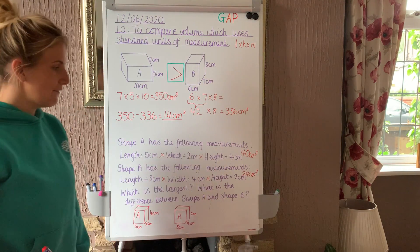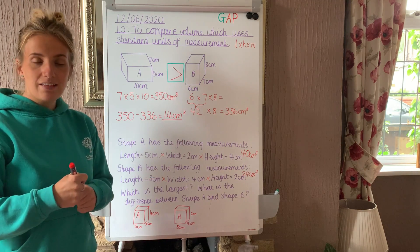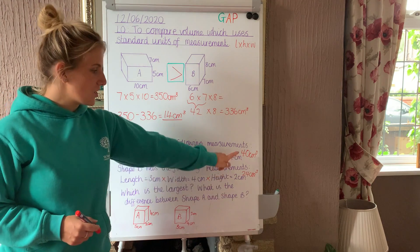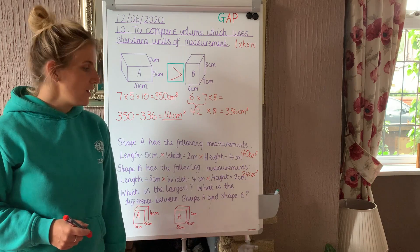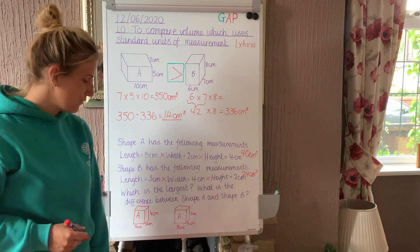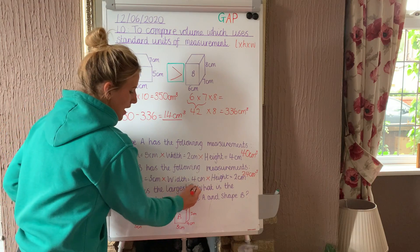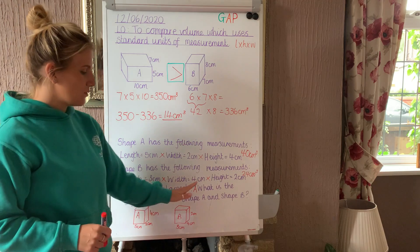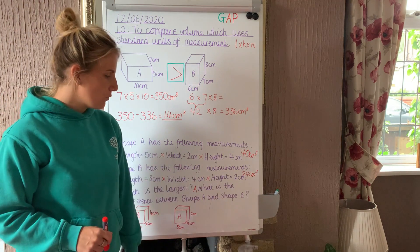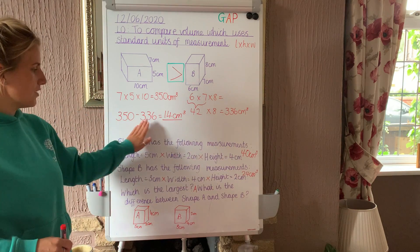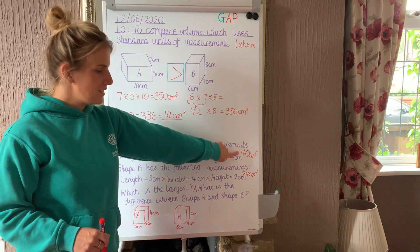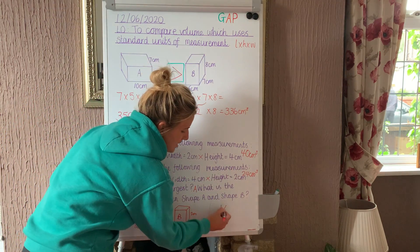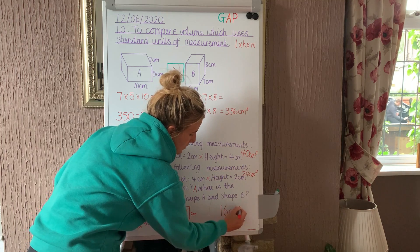All I've done is calculate the volume of the two shapes, then move on to find which is the largest — 40 or 24. We know that 40 is larger than 24, so the largest is shape A. And finally, what is the difference between shape A and shape B's volume? We do the largest take away the smallest: 40 centimetres cubed take away 24 centimetres cubed gives me 16 centimetres cubed.